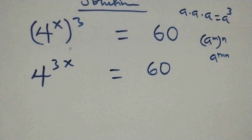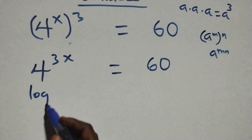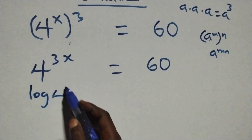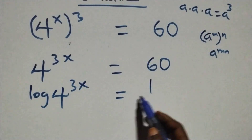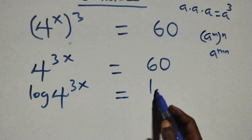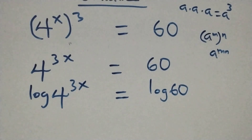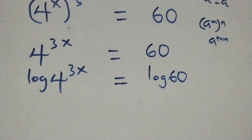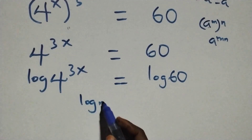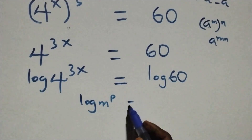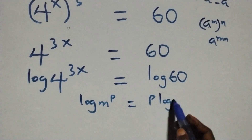The next step here, we take the log on both sides. That is, we have log of 4 raised to power 3x equals log 60 on this side. The next step, we apply the power rule of logarithm: when we have log m raised to power p, this is the same thing as p times log m.